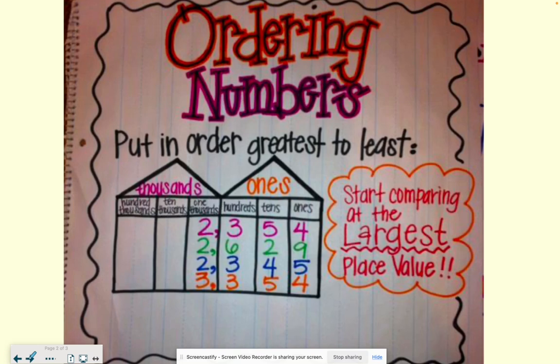In order to do this, it's important to have that understanding of the place value chart. So again, we can look at the ones, tens, hundreds, thousands, one thousands, ten thousands, hundred thousands, millions, one millions, ten millions, hundred millions, and so on.